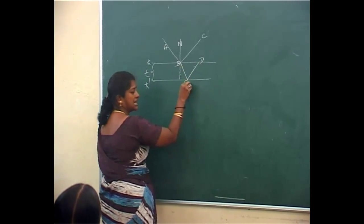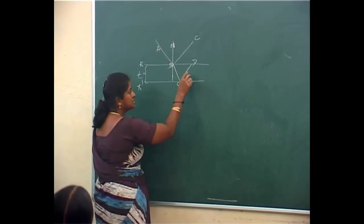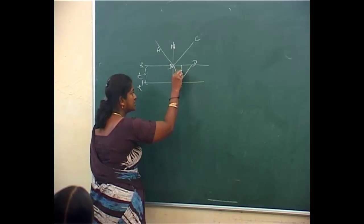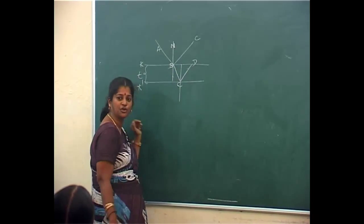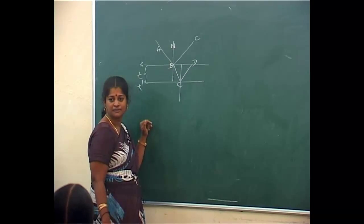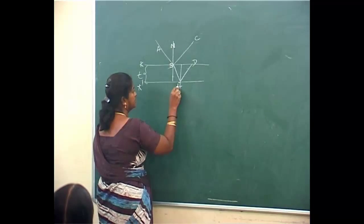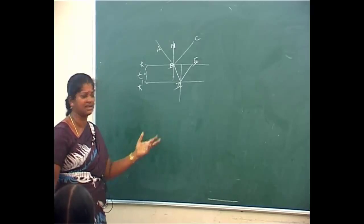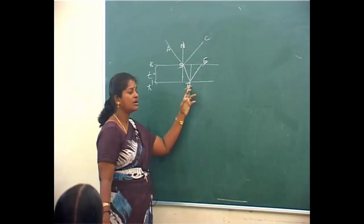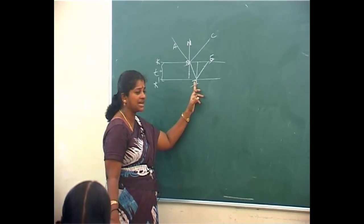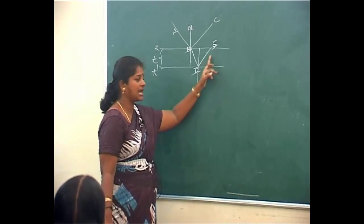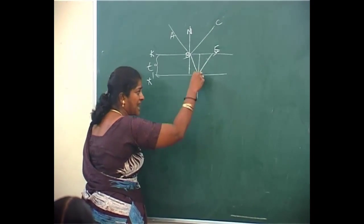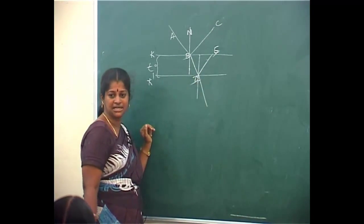Along CD, the light gets reflected, and with respect to the normal only, I have to see it. Now what happens: a part of light gets reflected along DE and a part gets refracted inside the other medium.